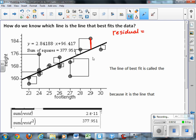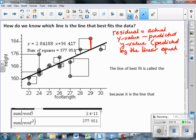Residual is equal to actual y value minus predicted y value predicted by the linear equation. So I come up with some sort of an equation that relates height to foot length. And if I were to plug in a person's foot length, 29, into this equation, it would give me some sort of prediction for their height, looks like maybe about 177.